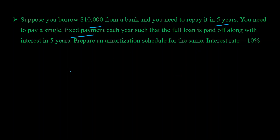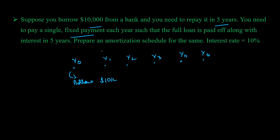Let's chart out the timeline. You're borrowing ten thousand dollars in the present, so let's call that year zero. You need to start paying this loan back from year one through year five, and after making the payment in year five you should have completely paid off the loan along with interest. You can only make a single fixed payment each year — all of them have to be equal — and let's assume that value to be C. So you make payment C in years one through five, and we need to figure out C.